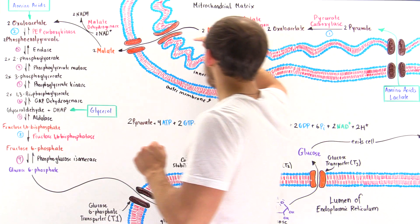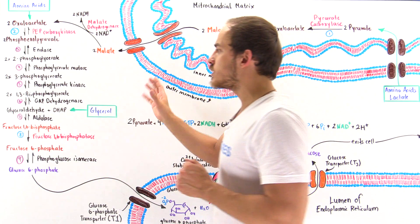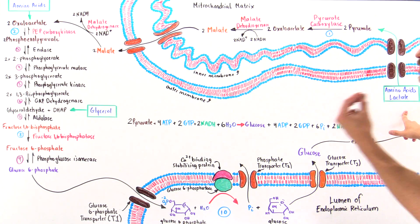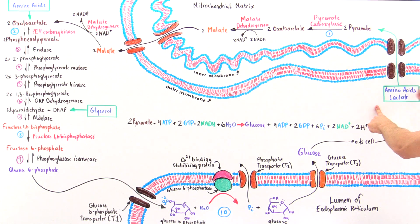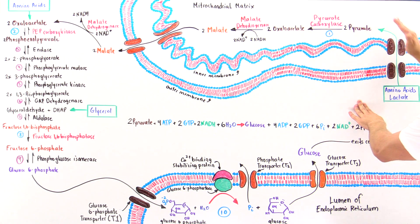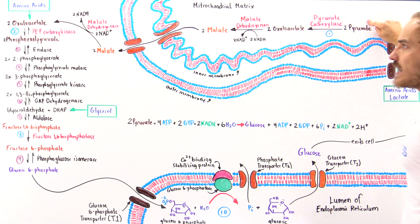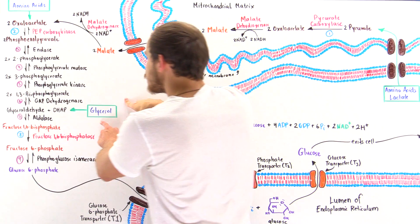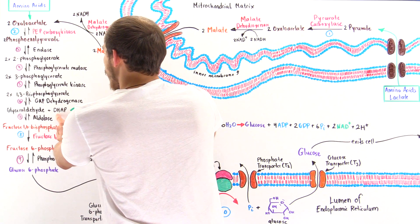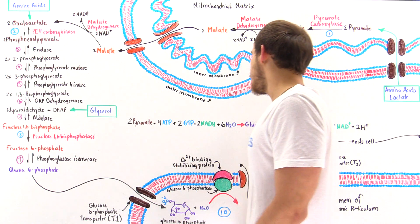Pyruvate molecules are not the only non-carbohydrate precursor molecules that can be used. We can also use amino acids, glycerol, and lactate. Lactate and certain amino acids such as alanine can be transformed into pyruvate, entering the gluconeogenic pathway via pyruvate. Other amino acids can be transformed into oxaloacetate, and glycerol molecules are transformed into dihydroxyacetone phosphate, entering the process at that stage.